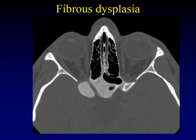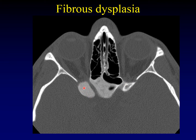Fibrous dysplasia is the disease classically described as having a ground glass density. This is the density that has been likened to the ground glass you see on shower doors. The key thing about fibrous dysplasia is that it is expansion of an underlying bone, and that bone expands but retains its normal configuration. This is the anterior clinoid process on the left, and this fibrous dysplasia lesion still has the same configuration as the anterior clinoid process.